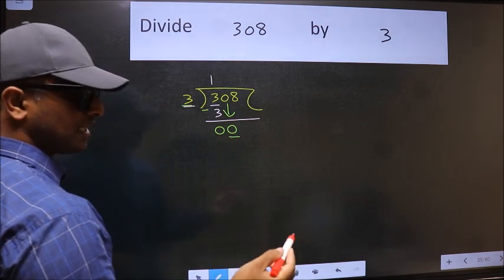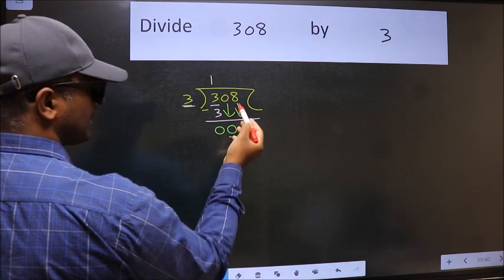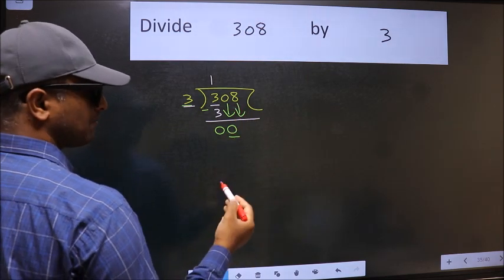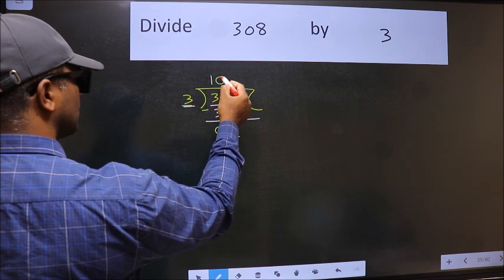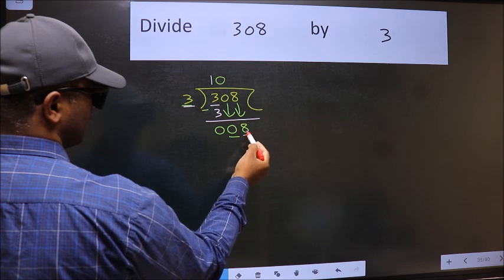So, we should bring down the second number. And the rule to bring down the second number is we should put 0 here. Then only we can bring this number down. Now, 8.